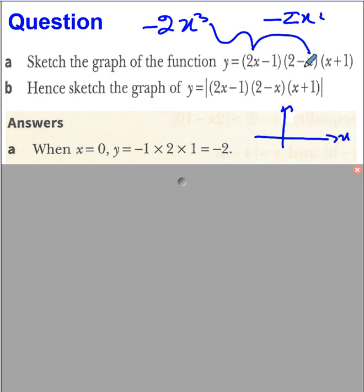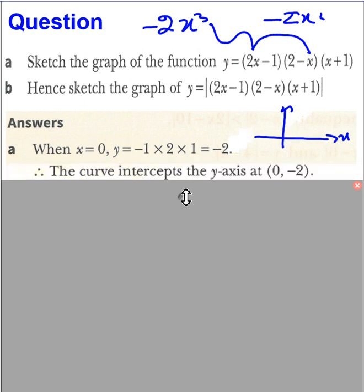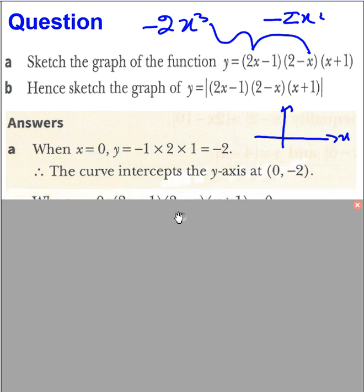So if you put x = 0 in all these three factors you get -2. It means curve will pass through -2. Now for y-intercept you have written the point here (0, -2).